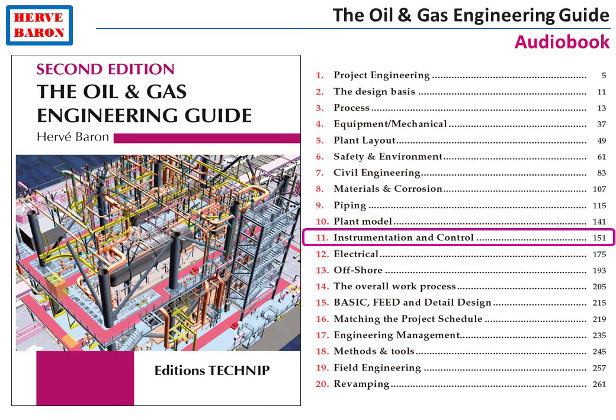Welcome to Chapter 11 of the Oil & Gas Engineering Audiobook. This chapter presents the work and deliverables of the instrumentation and control discipline, also called instrumentation and automation discipline. The scope of this discipline is to specify all the field instruments and to specify all the plant systems, including the process control system, the emergency shutdown system, fire and gas system, and other systems.